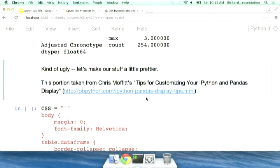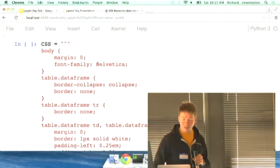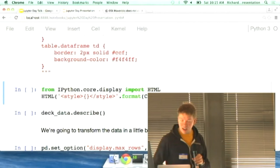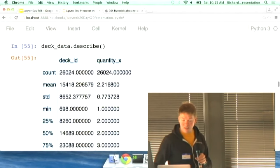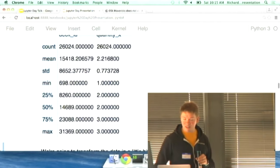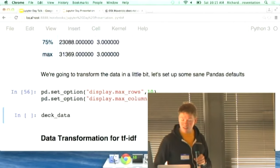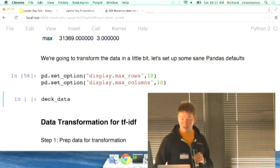But it's kind of ugly. So let's use Chris Moffitt's tips for customizing your IPython and Pandas display and just change the CSS. So here we're kind of changing what the font frame is, what these tables look like. And we can import the HTML function out of the IPython core. It's not going to show anything. But now all of a sudden our tables look a lot cooler. That's just kind of a quick little side note. I like pretty things. So we're going to transform the data a little bit. I'm going to make some kind of more sane Pandas defaults. This will help the stuff show on the screen without having to scroll through things. And so basically we're going to get 10 rows and we're going to have a max of 10 columns on the screen.